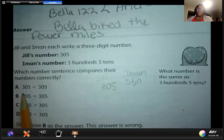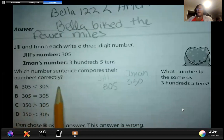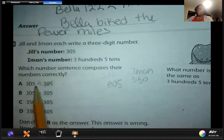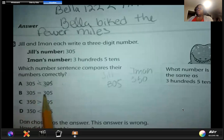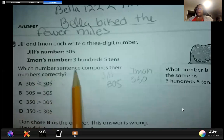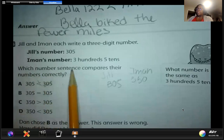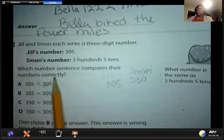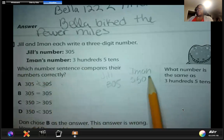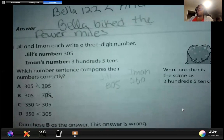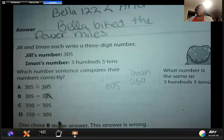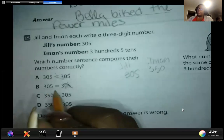Here we have A: 305 is less than 305. We know right off the bat this is not the right answer because 305 is equal to 305. Then we have 305 is equal to 305. This is a true statement, but it doesn't compare. It says which number sentence compares their numbers correctly, so even though that's a true statement, it's not what we're looking for. Now we have C: 350 is greater than 305. Yes, it is. So it's going to be C.